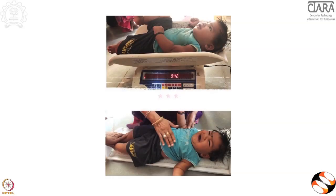When you go to a pediatrician with a small child, they plot the child's height and weight. For children under two years of age, they use a length-for-age chart; for those older than two, they use height-for-age. Length is measured while the baby lies down; height is measured in the upright position. Here we're taking the length of a child under two years of age and checking the weight, then using the WHO growth chart, which I'll discuss in detail in my last session.